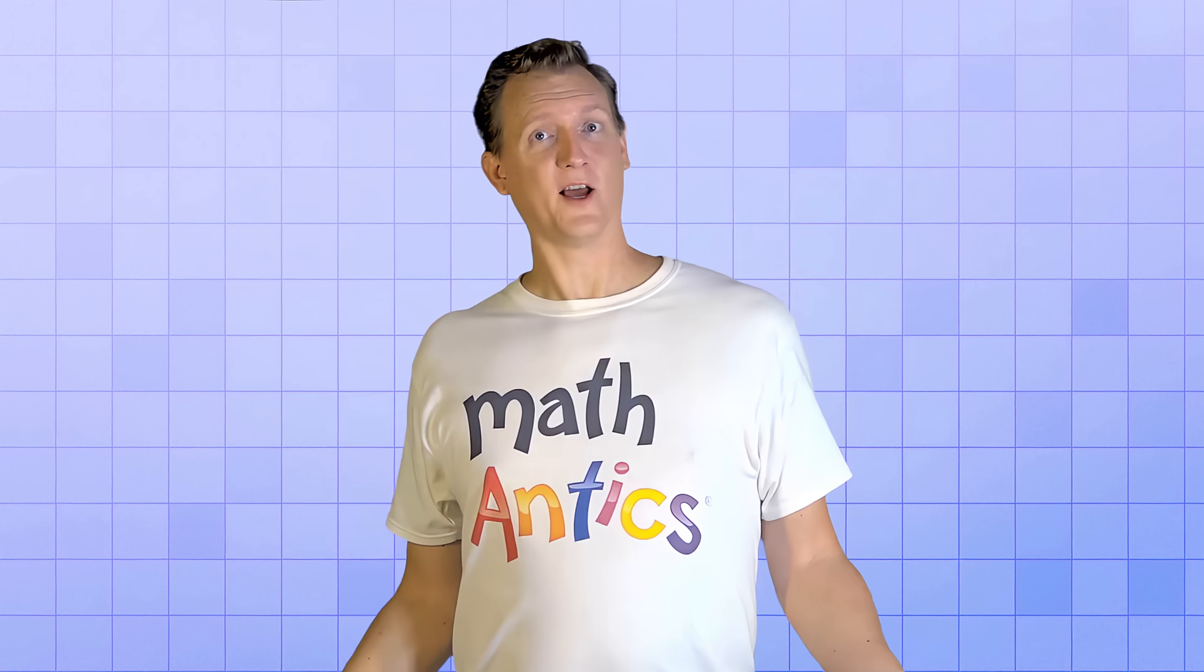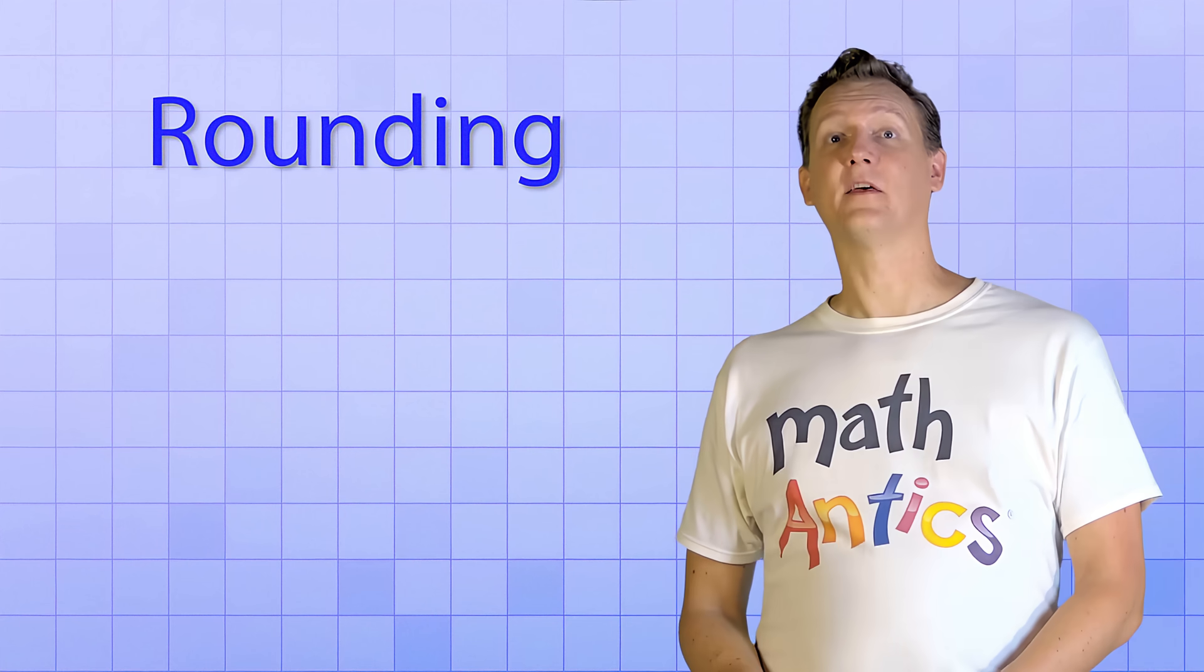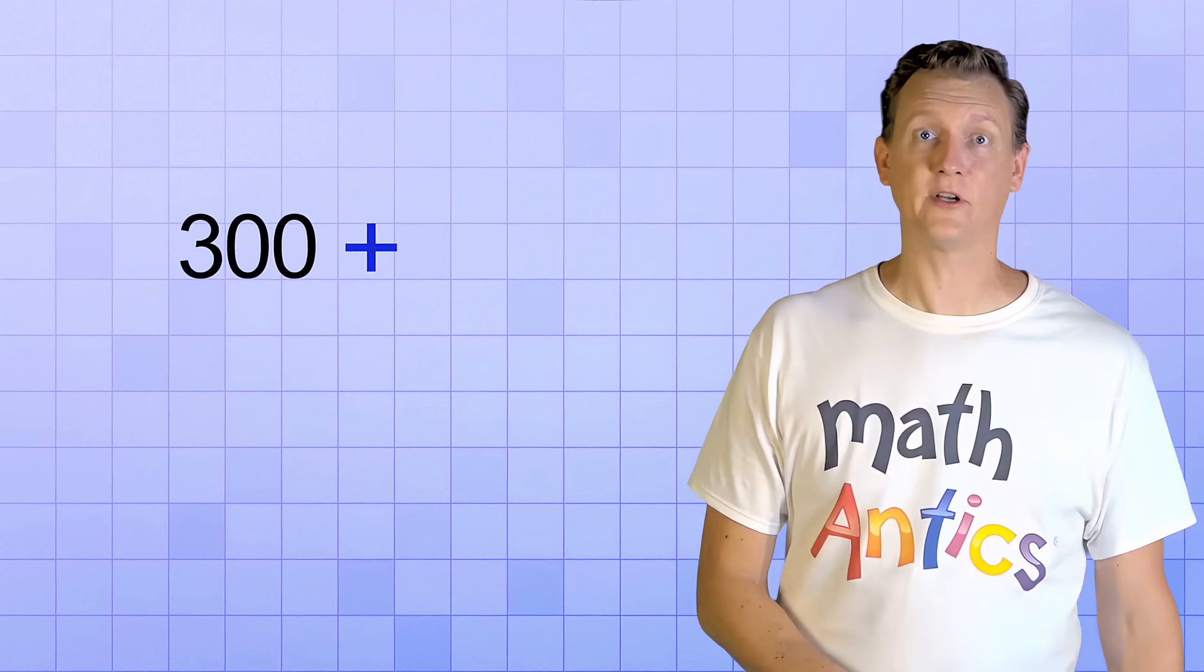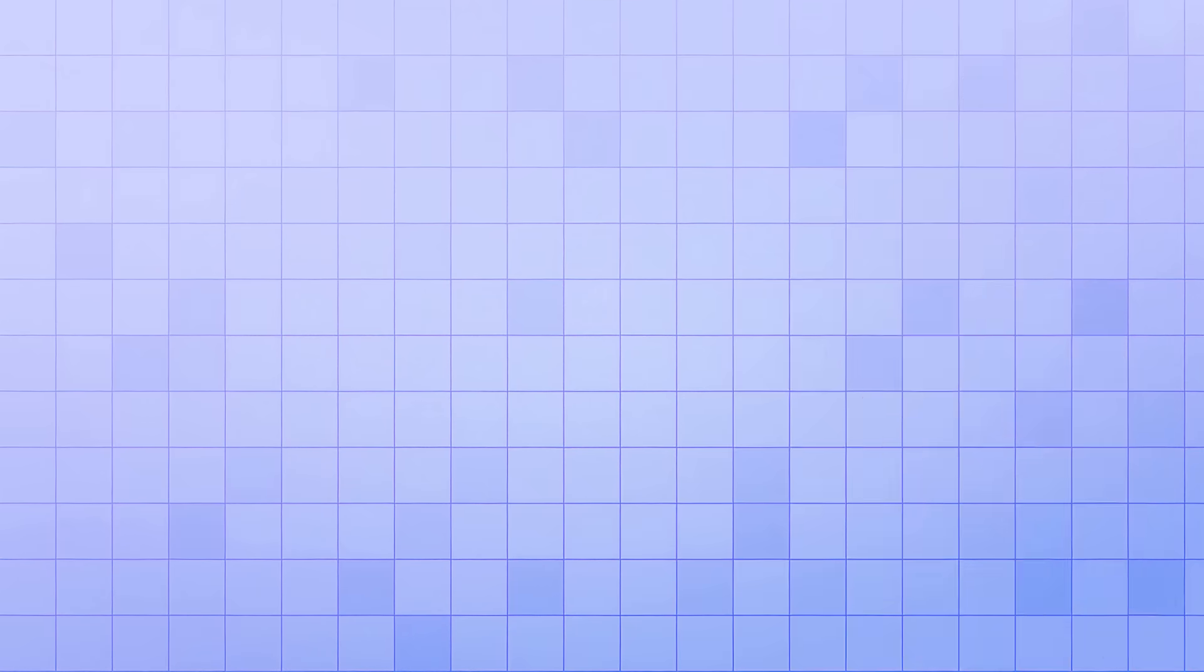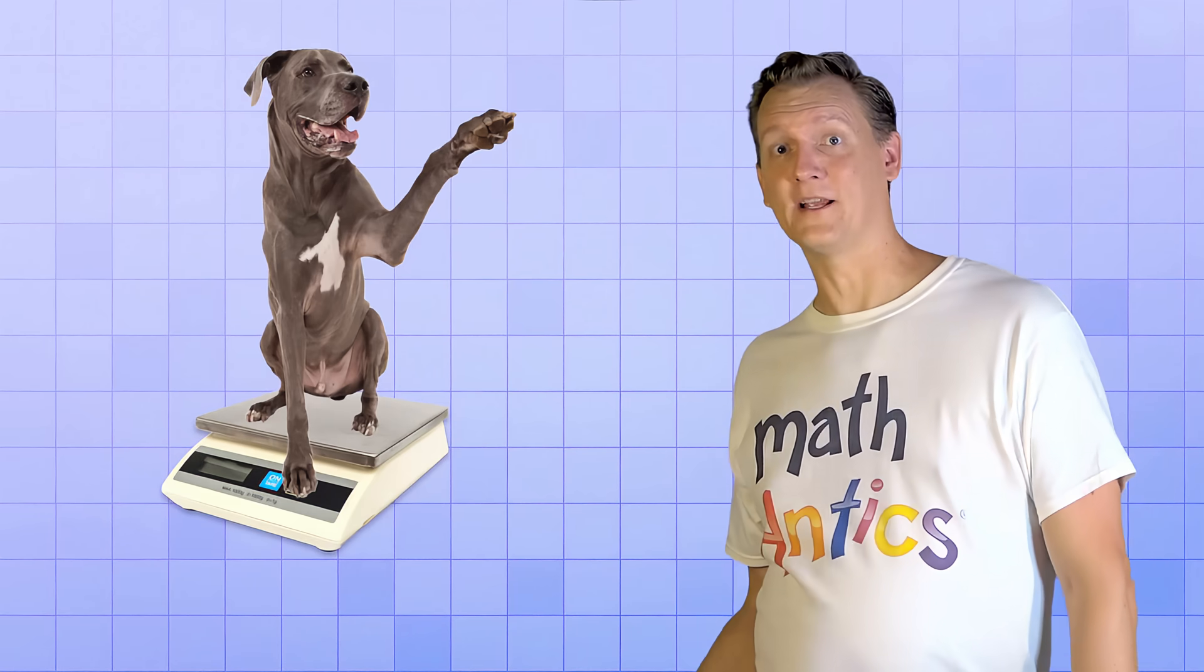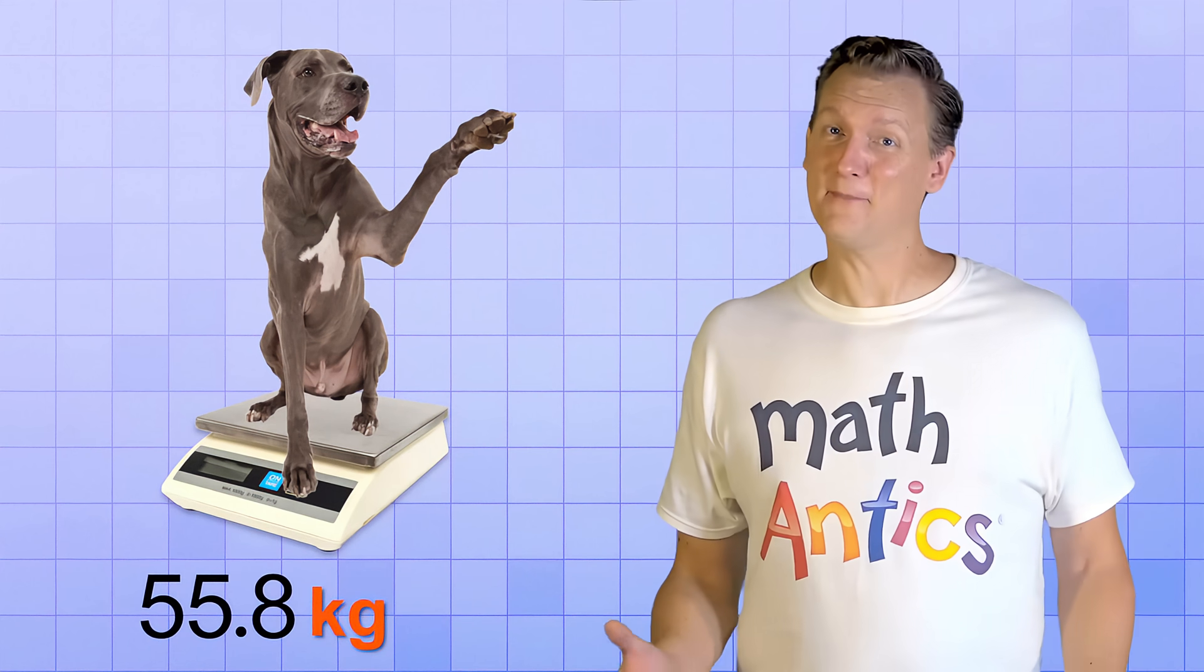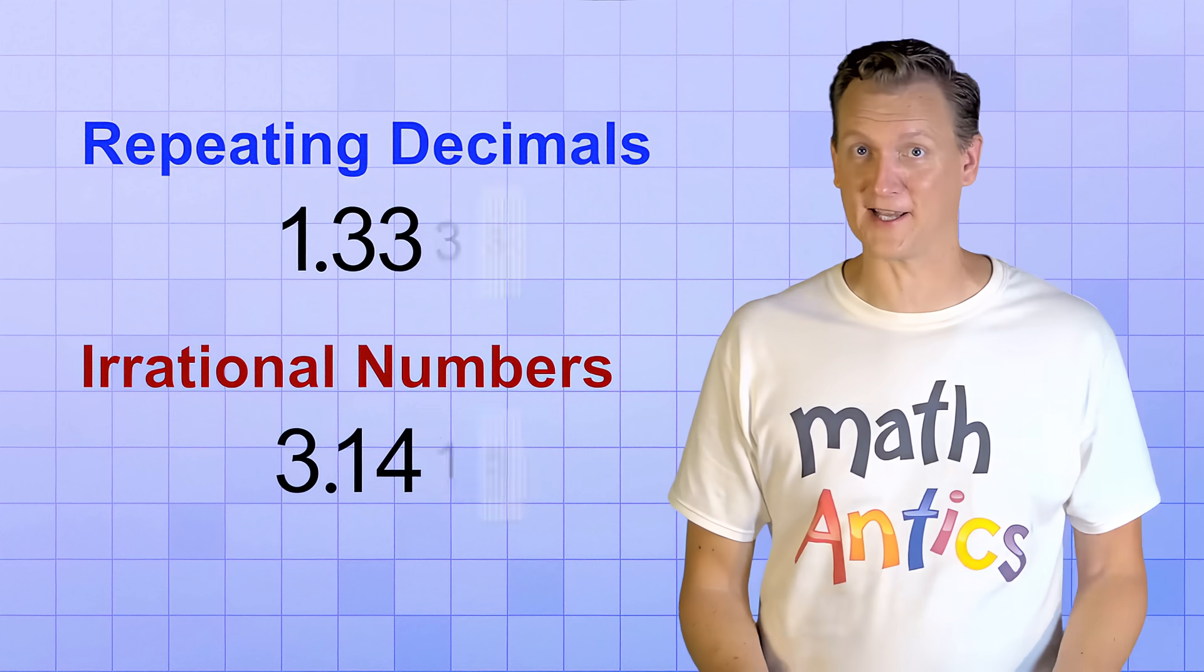But you might be wondering, why would we ever want to make a number less precise in the first place? What is rounding good for? Well, rounding numbers can often make them a lot easier to do calculations with. Like, it would be a lot easier to quickly add 300 and 500 than it would be to add 312 and 498. Or, sometimes you just don't need very much precision. Like, you might not need to know that your dog weighs 55.83297 kilograms. 55.8 kilograms might be precise enough. And some numbers, like repeating decimals or irrational numbers, have to be rounded off because we can't just keep writing decimal digits forever.